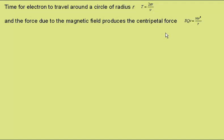As we saw previously, the force due to the magnetic field, Bqv, produces the centripetal force for the electrons, mv squared over r. This gives us the radius of the motion as being mv squared over Bqv. Again, we can cancel one of the v's from the bottom and top, giving the radius as mv over Bq.